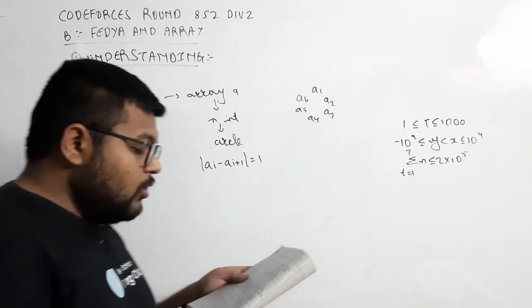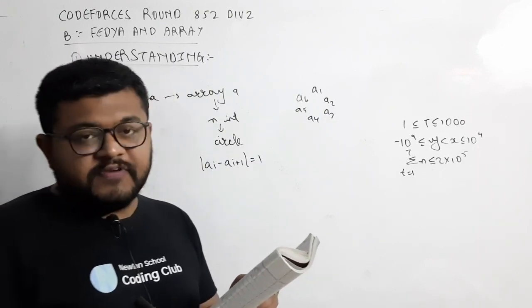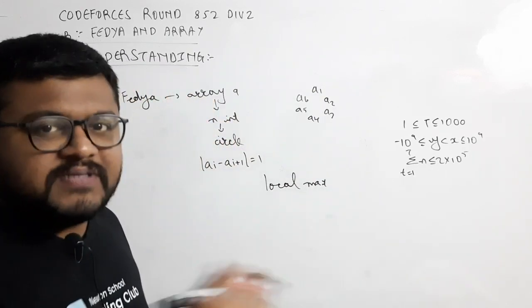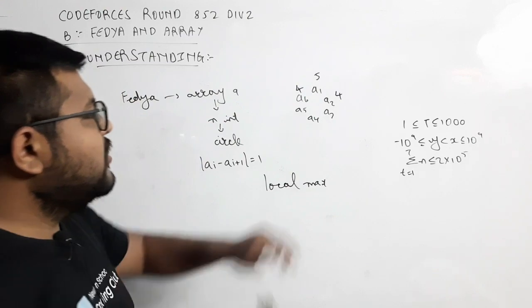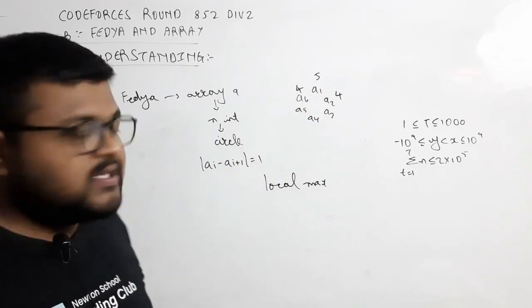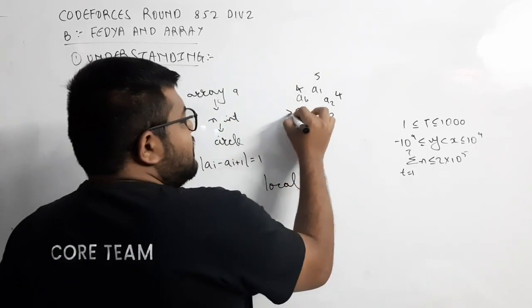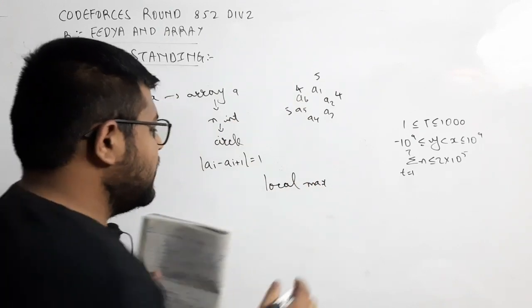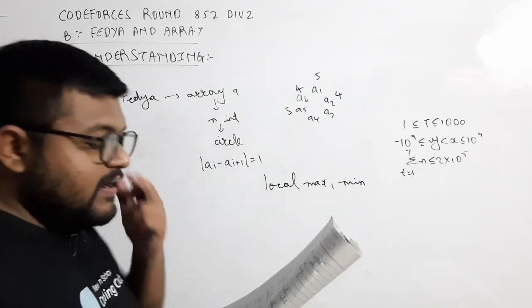Let us call a local maximum element which is greater than both of its neighbors, and a local minimum element which is less than both of its neighbors. What we call local maximum — when it comes to a2 and a6 which are greater than both of their neighbors — so this is local maximum. Similarly, a5 and a1 — a5 is less than both of its neighbors — so this is local minimum.